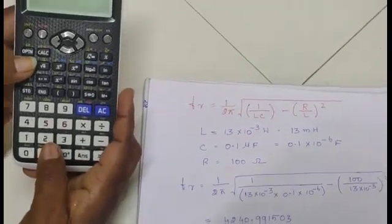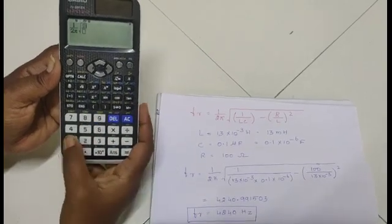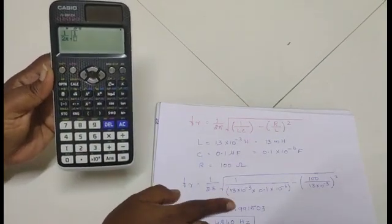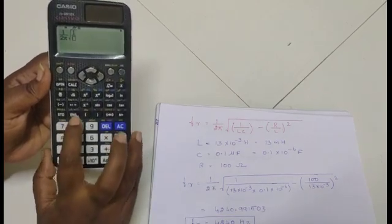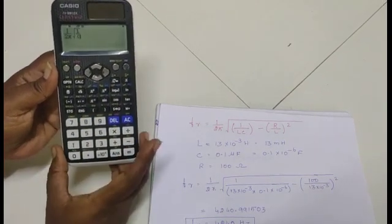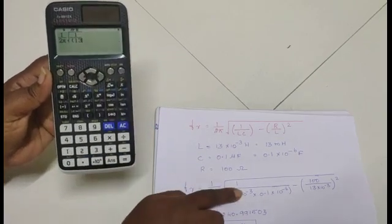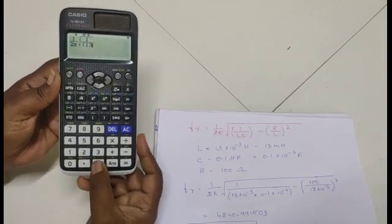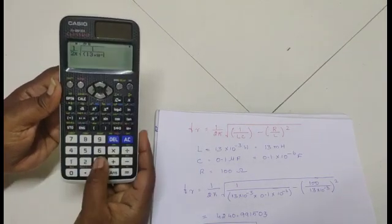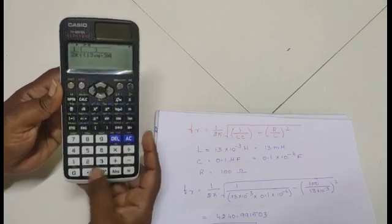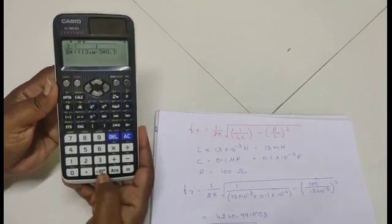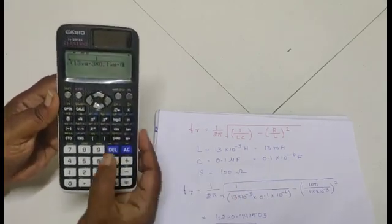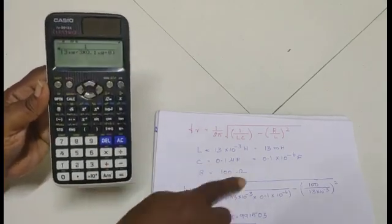Press this numerator and denominator button. In numerator, we have 1, come down and then we should put the bracket to multiply this. Open this bracket, 13 into exponential of minus 3, that is into 10 power minus 3. Press this button for power 10 power minus 3. Into 0.1 and then again power minus 6. Now, this LC is over. Close the bracket. First term is over.